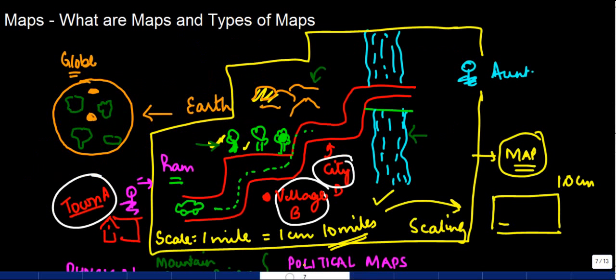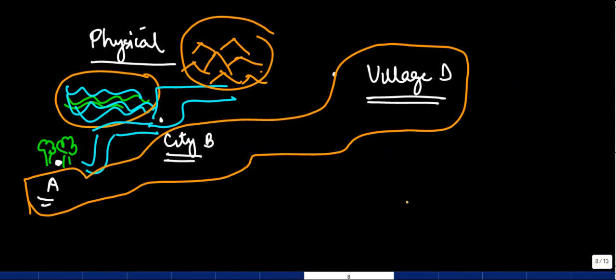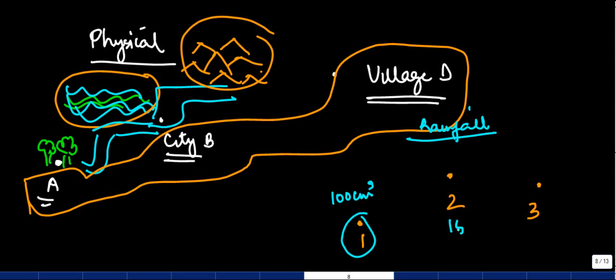And then the last one that we have is something which is called a thematic map. Now these are basically based on particular themes. So let's say for example if you had a thematic map, you have let's say region 1, region 2, and region 3. Let's say we take a thematic map of rainfall. This map will tell you that in this particular region the rainfall is 100 cm. Here it is 150, here it is 75. Cubic meter - centimeter is not the same one which we have in inches and all, it's cubic meter.